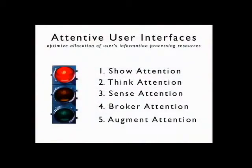We took these principles and thought about how to apply them to user interface design, coming up with five ways attention applies to UI design — published in Communications of the ACM in April 2003. First, interfaces need to show users' attention. Second, they need to think about and reason about the user's attention resource. Third, they need to sense user attention. Fourth, they need to negotiate user attention, encouraging turn-taking. And finally, they can augment user attention by increasing available resources and allowing the computer to take over part of the attentive process.